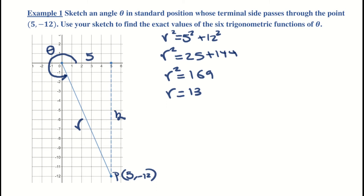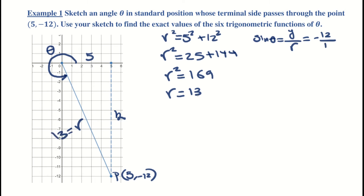Now that we have r, writing the trig functions is very simple. Sine of theta equals y over r, which is -12 over 13.